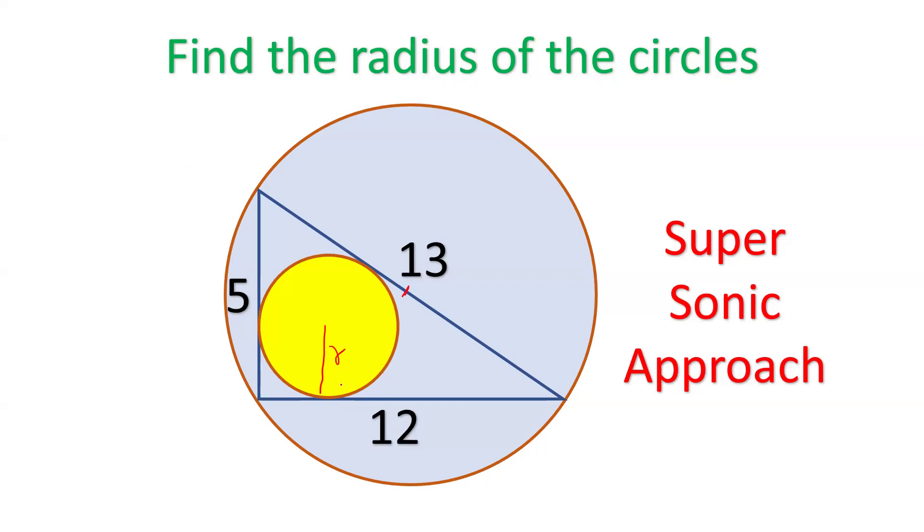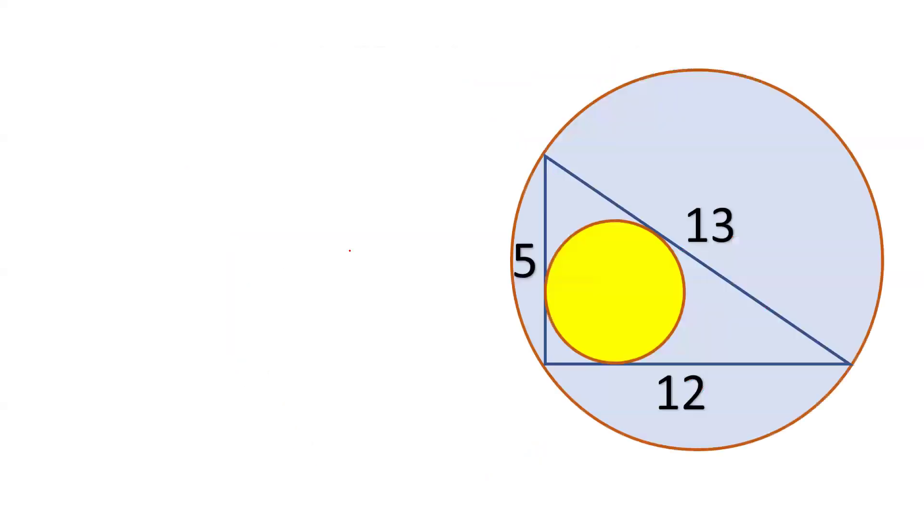This is the circumcircle and this is the incircle. We have to find out the radius of both, and I will give you a very fast approach. Let's start. First of all, let's see the sides of the triangle.